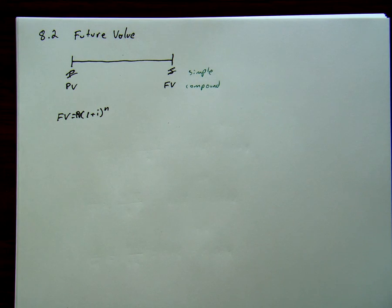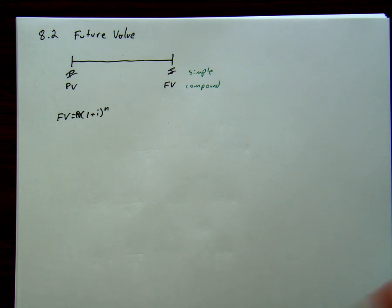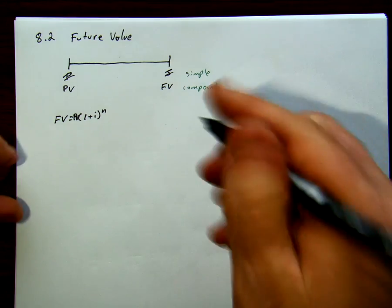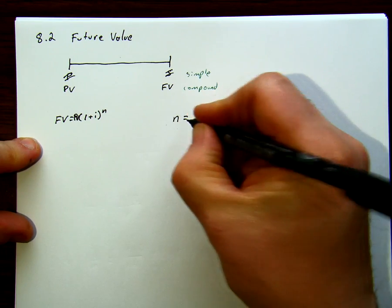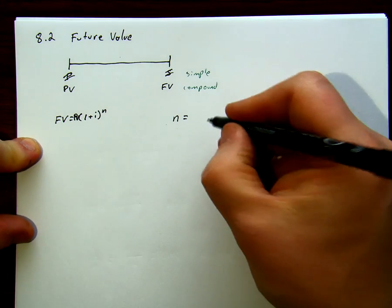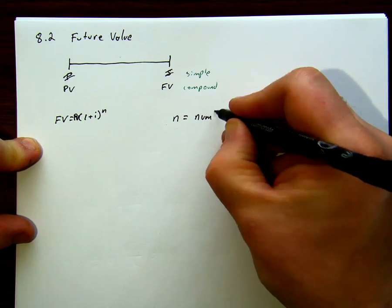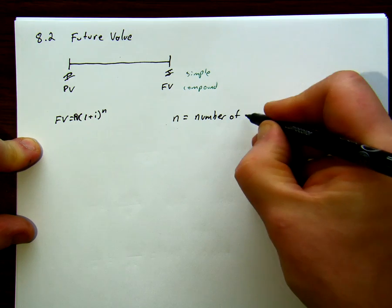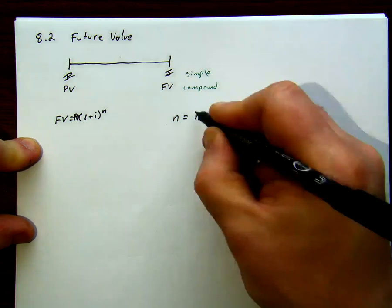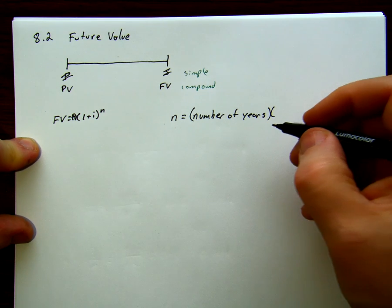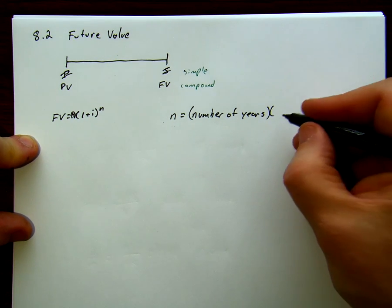The one thing we need to be able to calculate is a proper n. So we say our n, our value for n, is equal to the number of years times the number of compoundings per year.